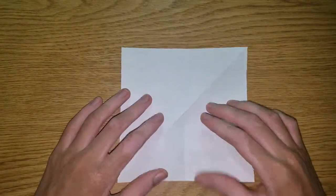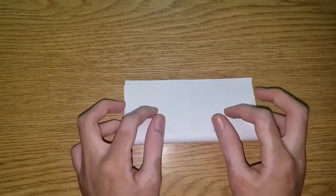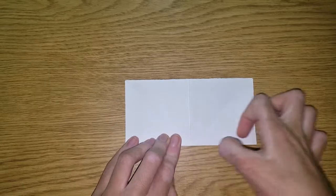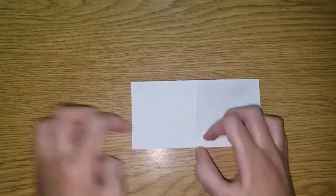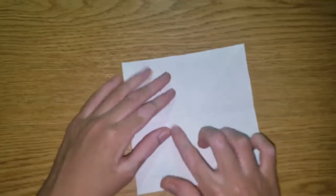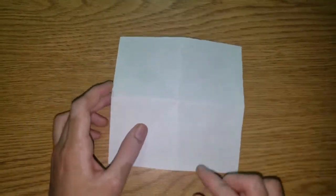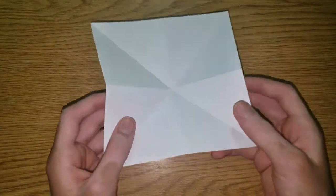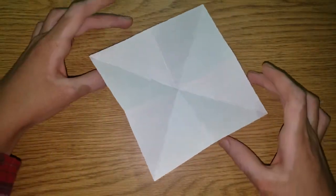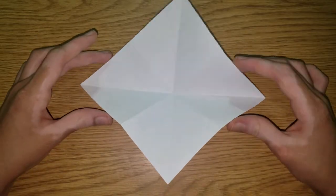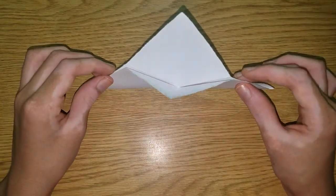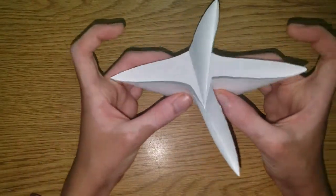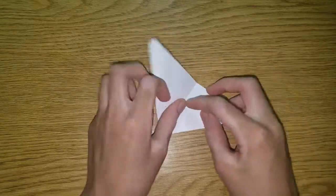Unfold, rotate, and fold this way. Unfold, turn the paper over, and you're going to make a water bomb base. And if you don't know what that is, what you're going to do is fold it like this. So you're going to fold both diagonals at the same time, like this, and then flatten.